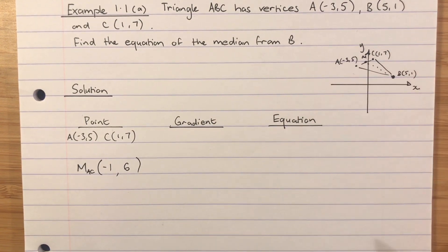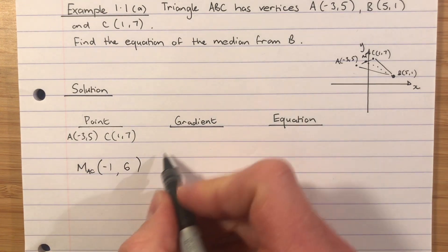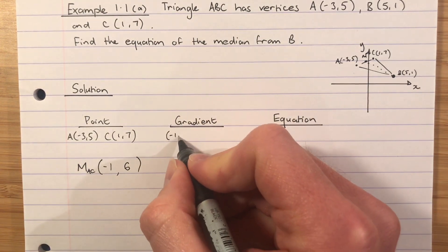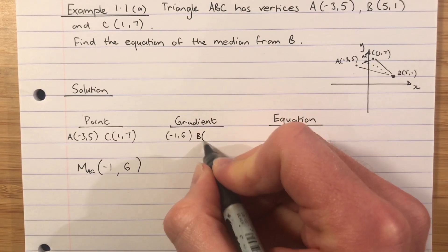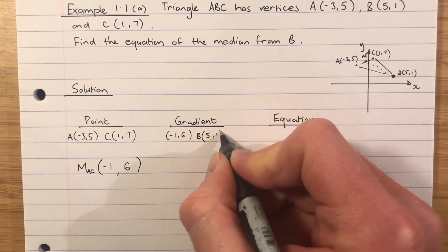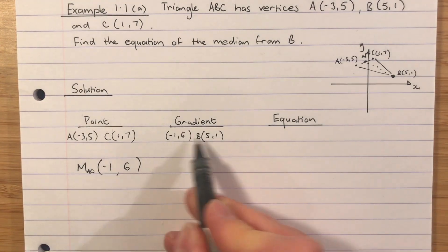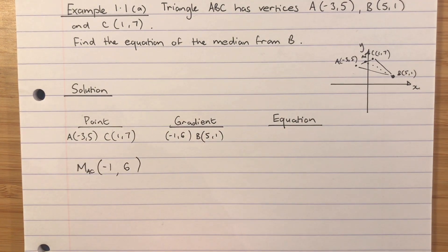Now I want to know the gradient. I want to know the gradient between point B and that midpoint. So I'll take this midpoint up underneath the gradient, and then I'm going to put point B here. Point B is (5, 1). It's always a good idea to write down the two coordinates that you're going to be using under your headings. It helps the marker follow your working.